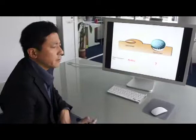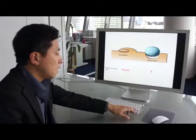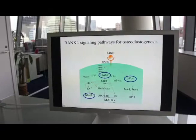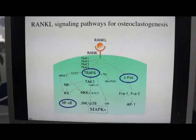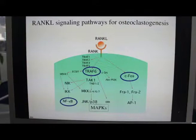The master transcription factor for osteoclast differentiation was not identified. RANKL was shown to be the essential cytokine for the induction of osteoclast differentiation. And several molecules, like NF-kappa-B, TRF-6, or C-FOS, were identified to be essential for osteoclastogenesis downstream of RANKL.